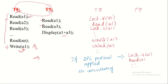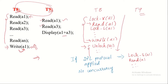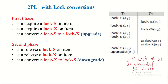T8 acquires the exclusive lock on A1 to perform the read operation, then acquires a shared lock on A2, and finally performs the write operation. It must acquire all required locks in the growing phase and release them in the shrinking phase. When it releases the lock on A1, only then can T9 acquire a shared lock on A1. So T9 has to wait until all T8's operations are complete, which reduces concurrency.